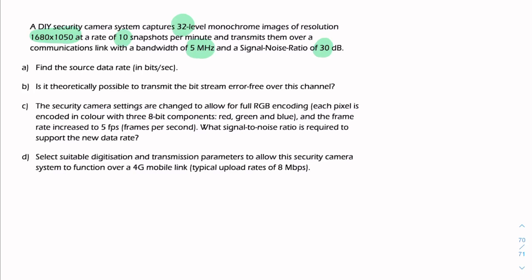So find the source data rate. We're looking for R, the data rate. By definition, it is the amount of data in bits divided by time. So the amount of data is equal to the number of pixels we have. Remember what we have is an image.